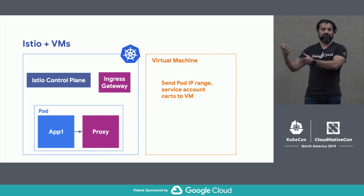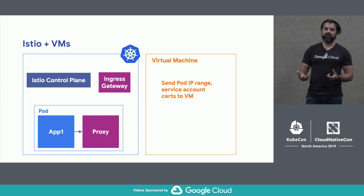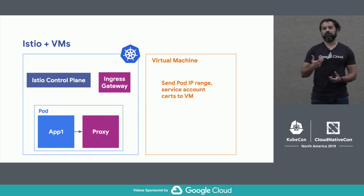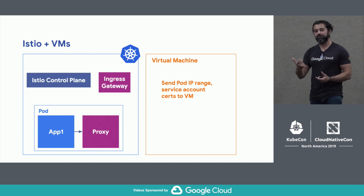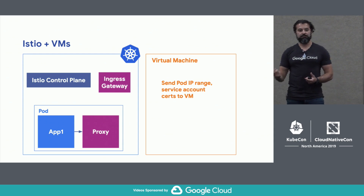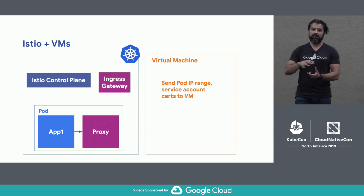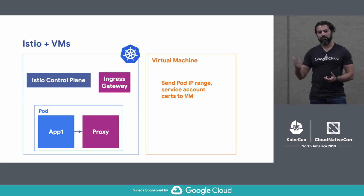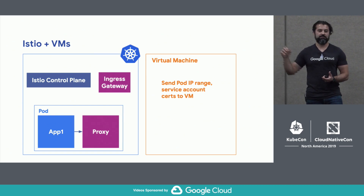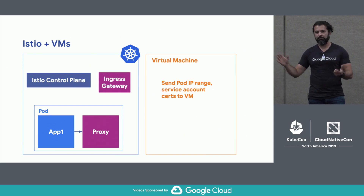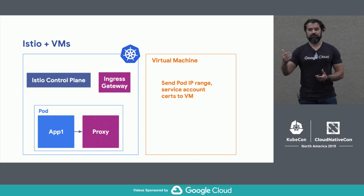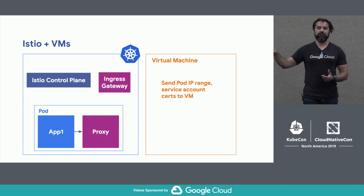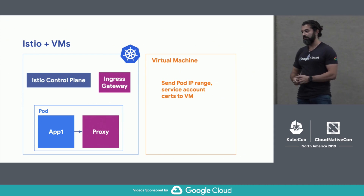Since every service must have an identity, inside Kubernetes that's done automatically using Kubernetes service accounts scoped to a namespace. We need to give the VM an identity explicitly. We decide which namespace to put the service in, take a service account, get its credentials and certificates, and hand them to the VM. Those are the two things the VM needs.